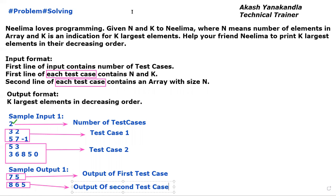In the first test case, capital N is 3, meaning the array has 3 elements: 5, 7, and -1. We need to output the 2 largest elements in decreasing order. The first largest element is 7 and the second is 5, so the output is 7 and 5.